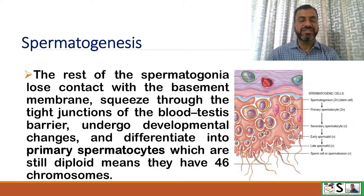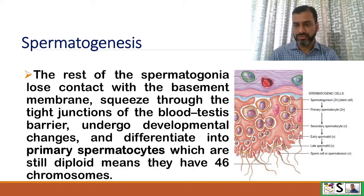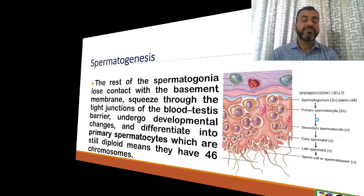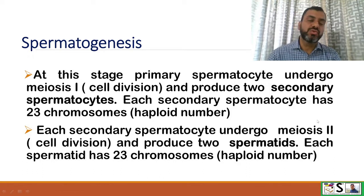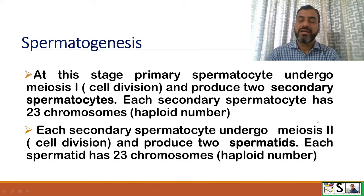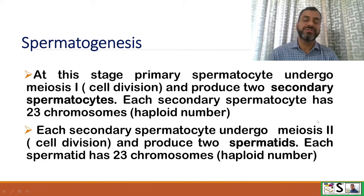The rest of the spermatogonia lose contact with the basement membrane, squeeze through the tight junctions of the blood-testis barrier, undergo developmental changes, and differentiate into primary spermatocytes, which are still diploid with 46 chromosomes. The primary spermatocytes then undergo meiosis I and produce two secondary spermatocytes, each with 23 chromosomes — the haploid number. Each secondary spermatocyte then undergoes meiosis II, producing two spermatids, each also with 23 chromosomes.